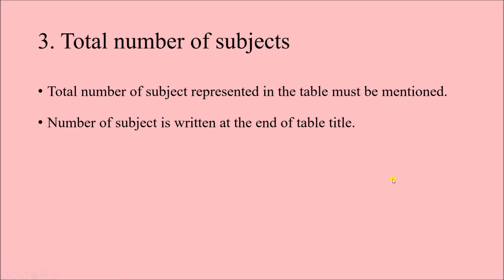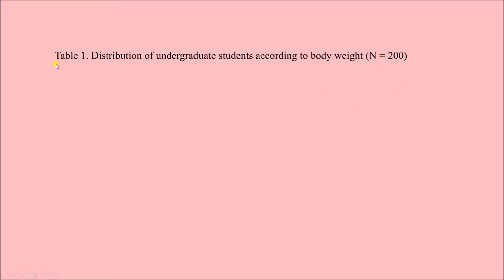The next point is the total number of subjects. The total number of subjects represented in the table must be mentioned, written at the end of the title. In our example, we have mentioned the total number of subjects as N = 200 in brackets. You may come across tables using small 'n' or capital 'N' — generally small n represents the sample and capital N represents the total population, but these are sometimes used interchangeably.